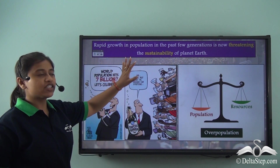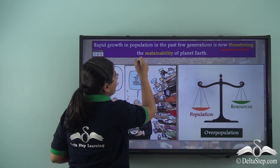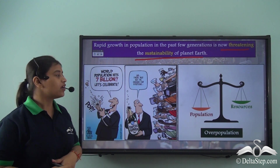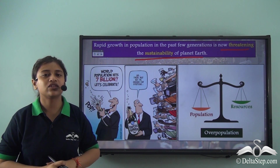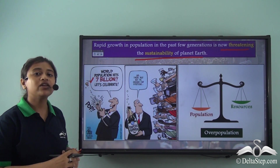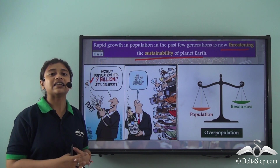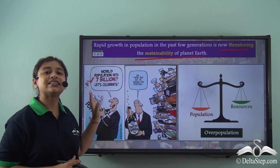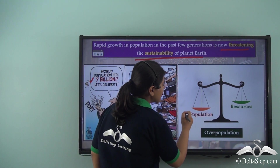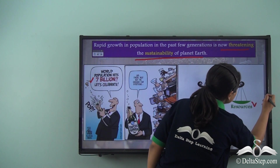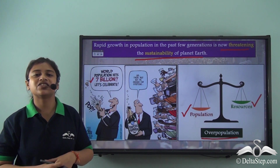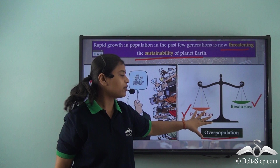The rapid growth in population over the past few generations has become a threatening point for the sustainability of planet Earth. Here is a satirical depiction of how the ever-increasing population is now a threat: people are celebrating hitting a population of seven billion, but we soon realize there are not enough resources to fulfil the needs of all seven billion people. A beam balance here simply shows that the population is much heavier than the resources available — such a situation is overpopulation.